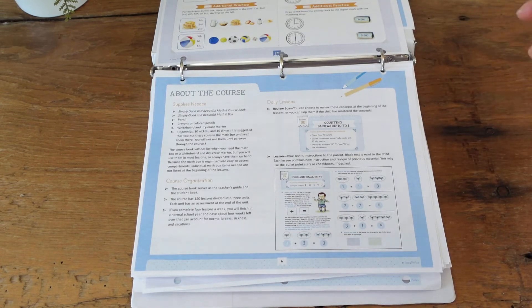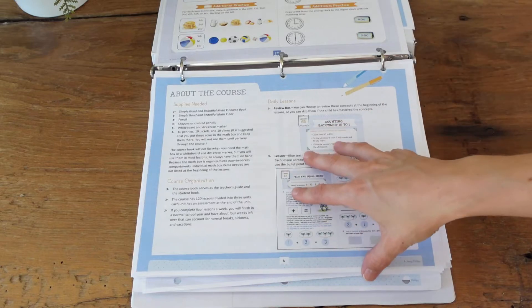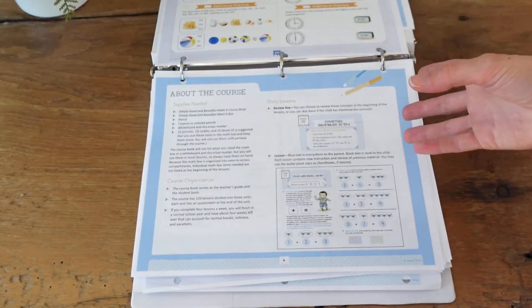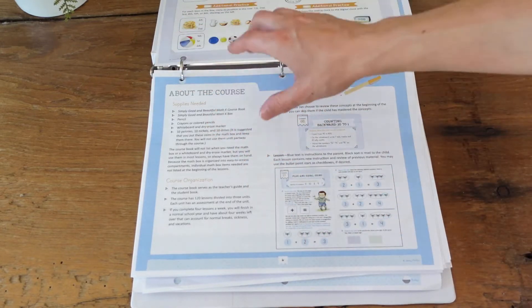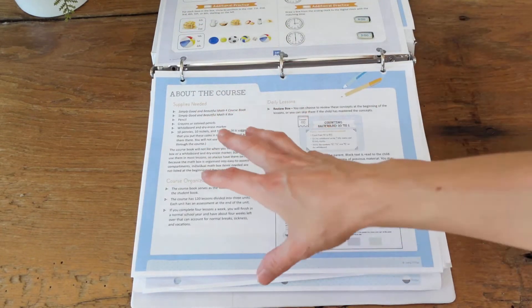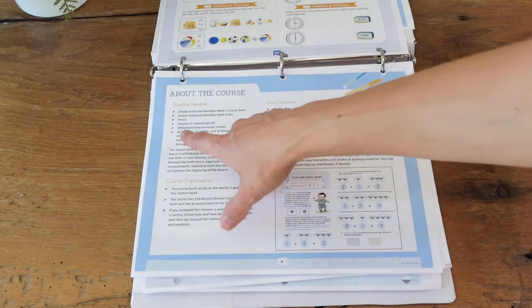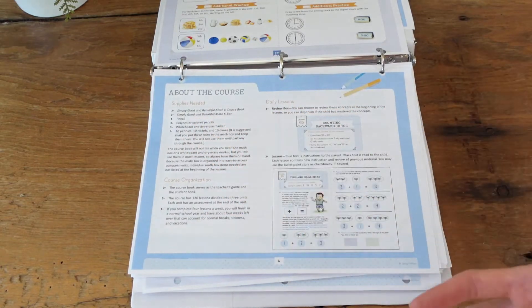However if you do have a more visual or hands-on learner I do highly recommend picking up that box if you can grab it. But your pencil, crayons, whiteboard, things like that are your necessities for doing this course and your 10 pennies, nickels, and dimes.